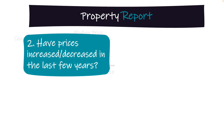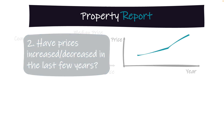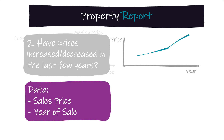Moving to the second question, we want to understand if the prices have increased or decreased in the last few years. For this, we propose to create a time series or a line chart where we're showing the median price of all the properties that have sold across the last few years. This should give us an idea if they're trending up or down or staying flat. For this, we're also going to require the sales price and the year of sale of every property.